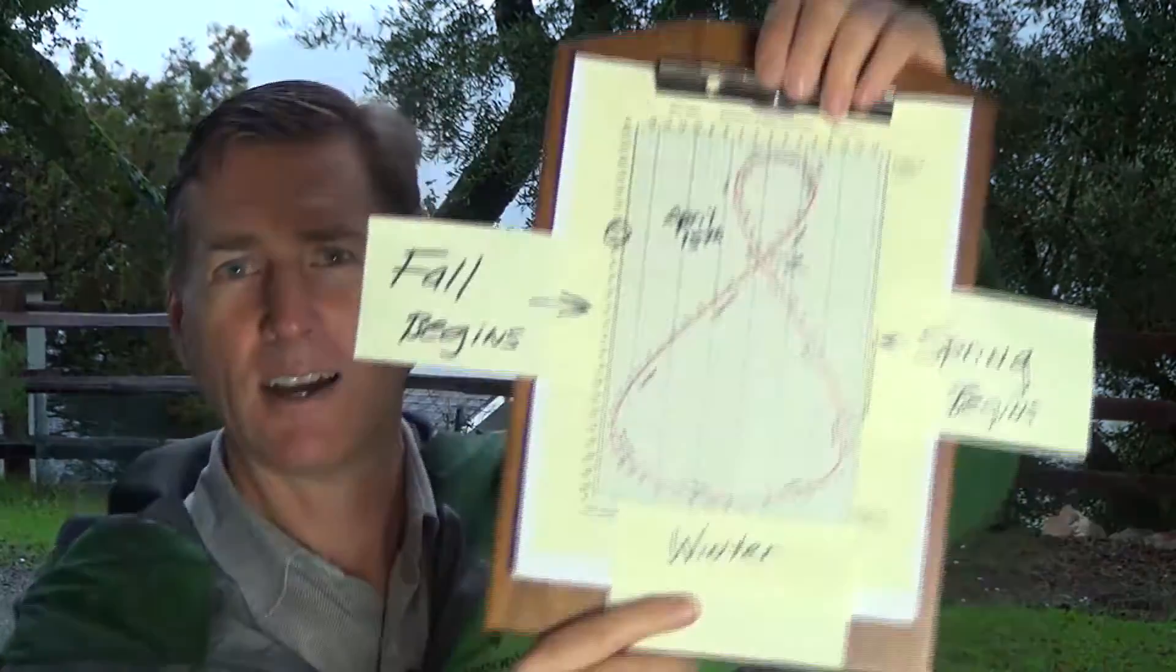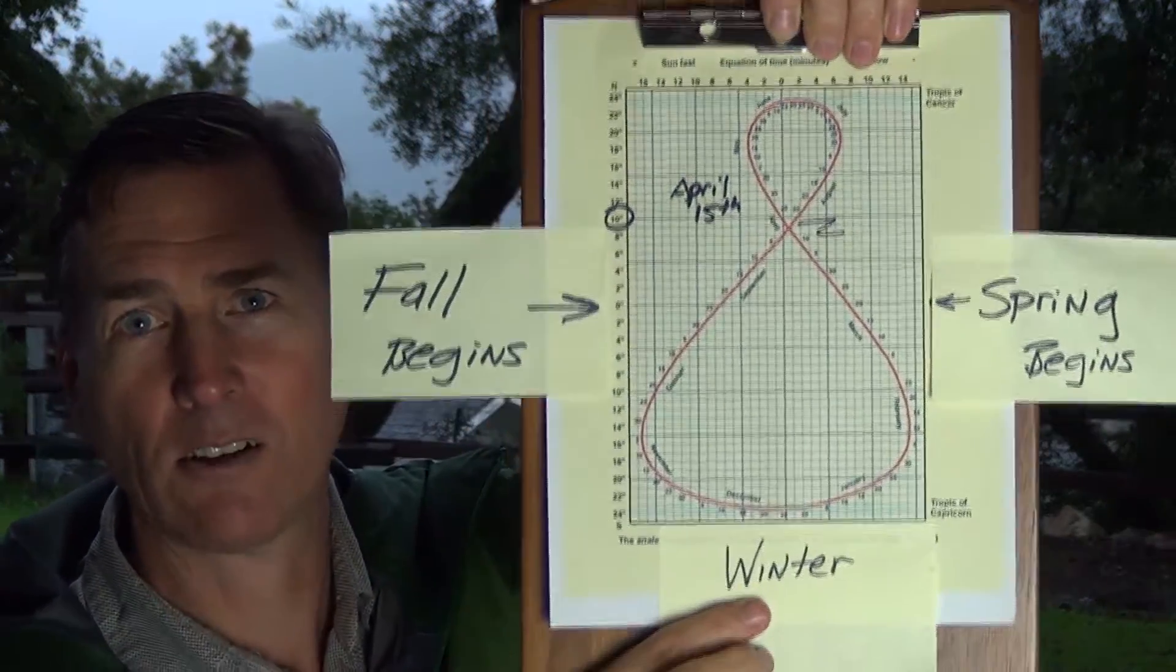Hey, I'm back. I wanted to tie in what we talked about last time. I've got a video on the solstice, particularly the winter solstice, and I wanted to tie that in with the Tropic of Capricorn, the Tropic of Cancer, and the Tropic of the Equator. So I've got this diagram right here, and it's called an analemma.